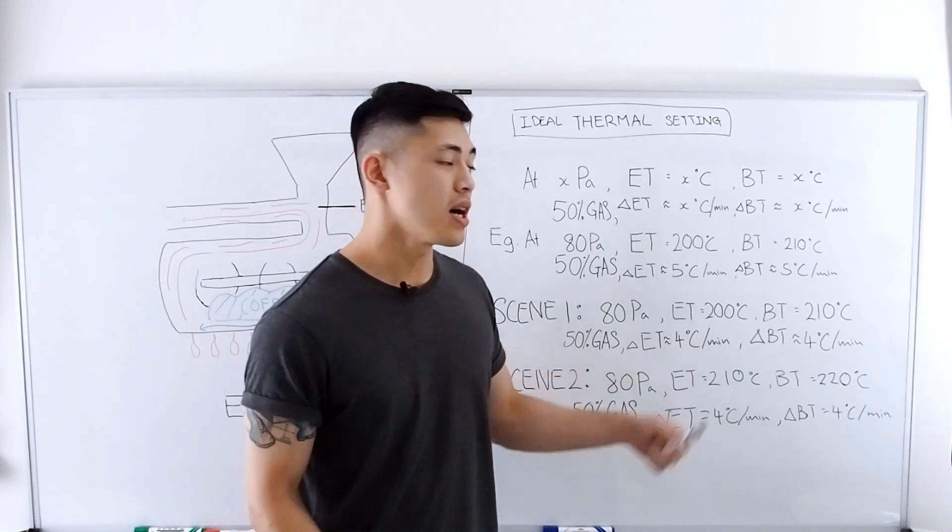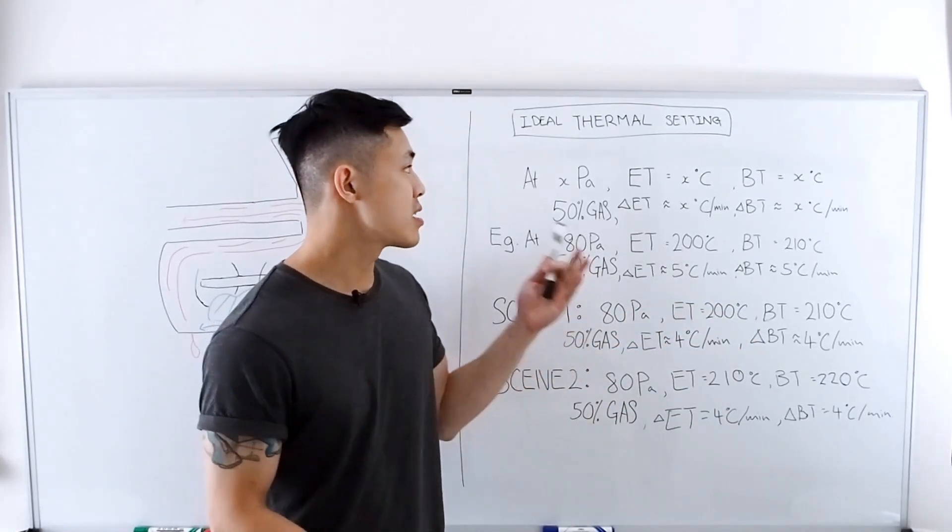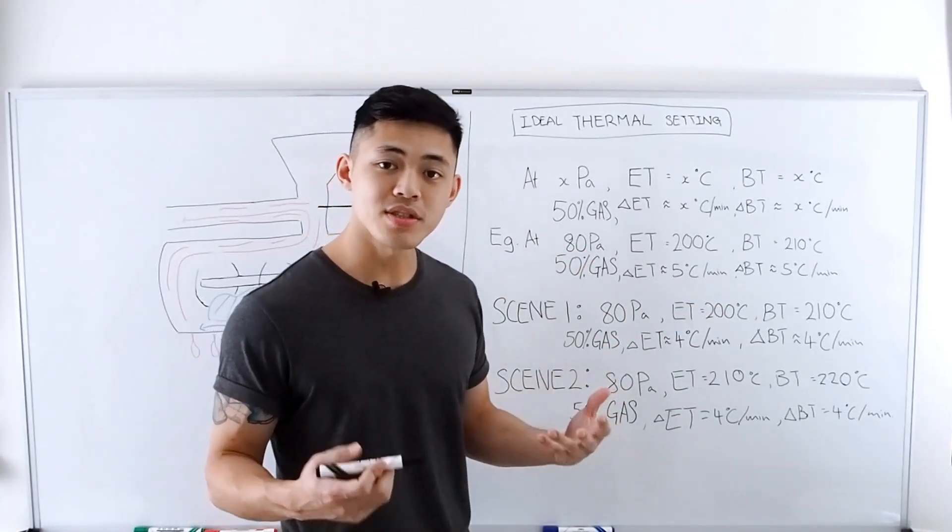If your delta ET and BT is now higher and has reached 5 degrees Celsius per minute, which is your intended thermal settings, then you're good to start your roast.